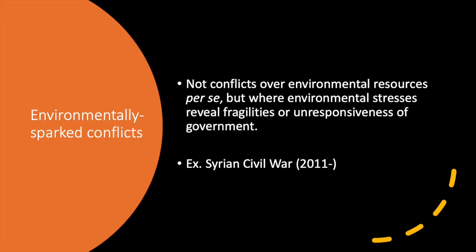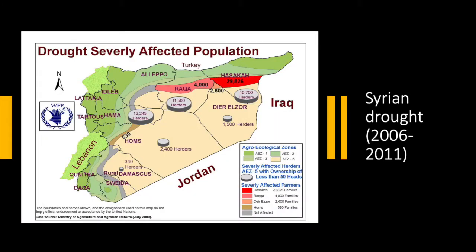A third category is environmentally sparked conflicts. In these conflicts, the central issues are typically not about access to natural resources; rather, the conflict is sparked by a shock to the system—like a drought or a food price spike—that highlights the frailties of the political system. Consider the Syrian civil war: from 2006 to 2011, Syria experienced one of the worst long-term droughts in the history of the Fertile Crescent—climate scientists called it the worst in the instrumental record.